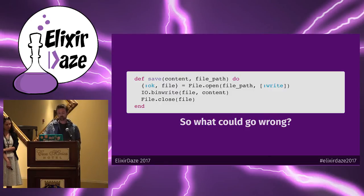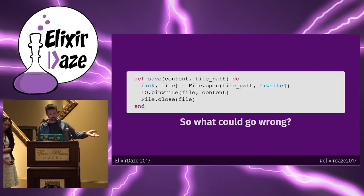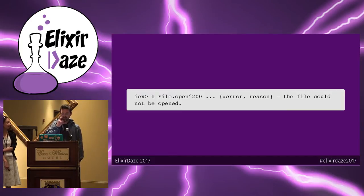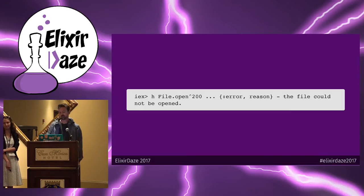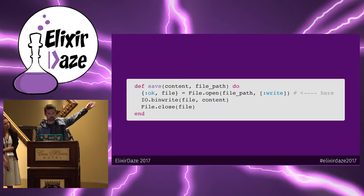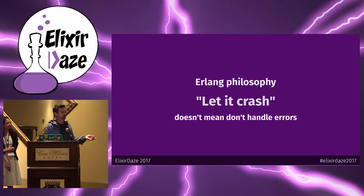We can pattern match on the result of the get, adding a case statement and pattern matching on the response. If we get a response, we'll save the contents to the file. If we get an error, we'll pluck the error out and return that to our caller. For saving a file: we open the file, write the contents, and close the file handler. But if we look in IEx at File.open, we can see the file could not be opened, returning a tuple with error and a reason. We're not pattern matching for that case, so we'll end up crashing with a match error.